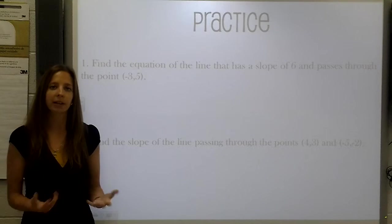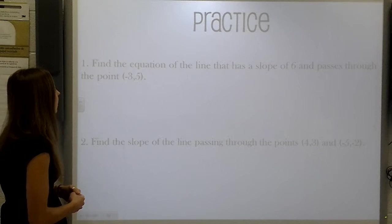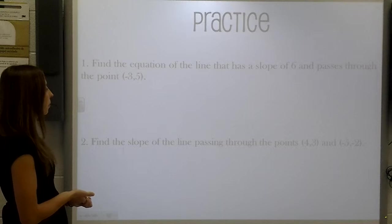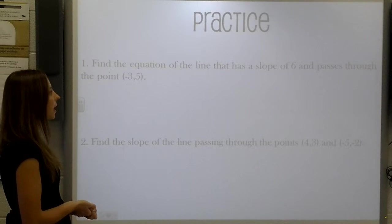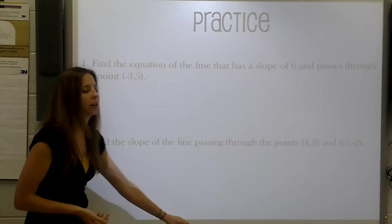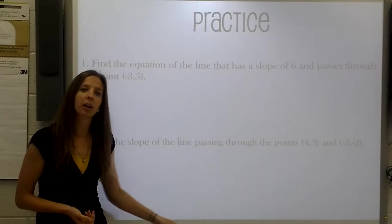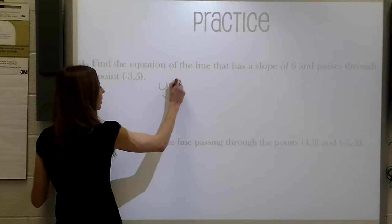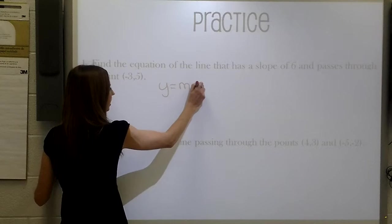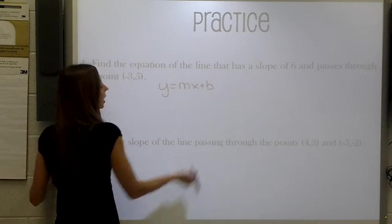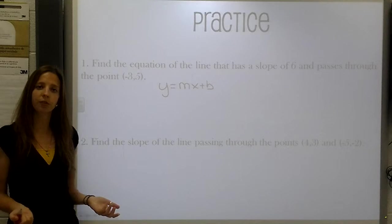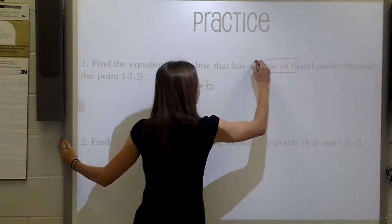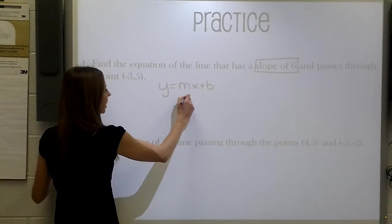Let's go through and practice a few examples here. Find the equation of the line that has a slope of 6 and passes through the point negative 3, 5. Well, if we use our formula, we can plug in and solve for this. So y equals mx plus b. Again, remember, that's just the standard formula for a line. Our slope of 6 is going to replace m.